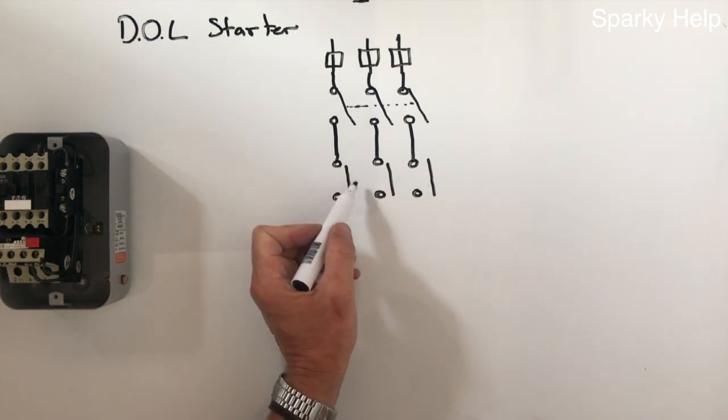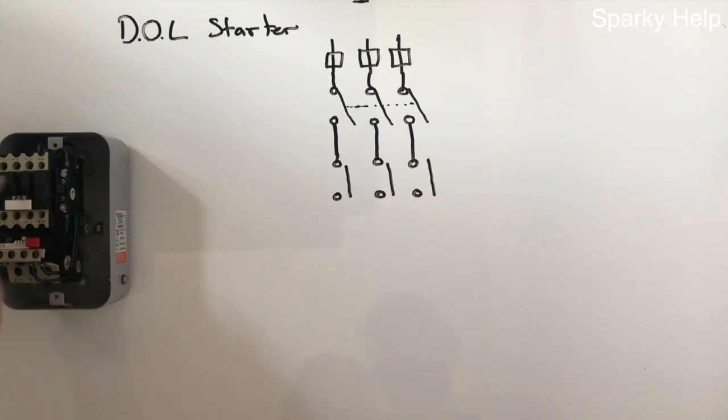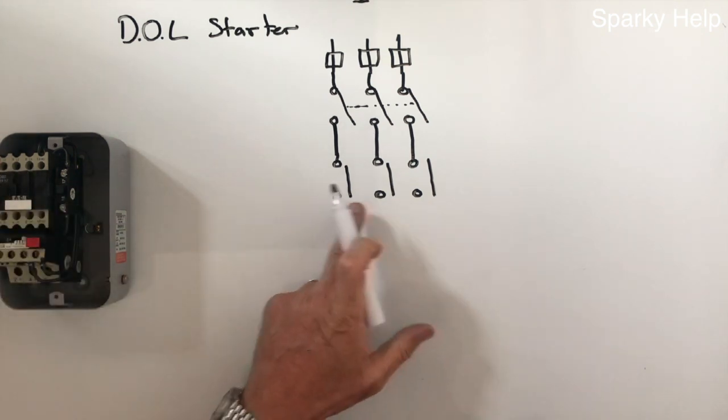So in there we've got a contactor and this is the contactor. You'll notice we've got three main poles and there are three poles. One, two, three, one, two, three.